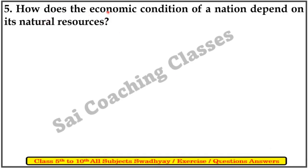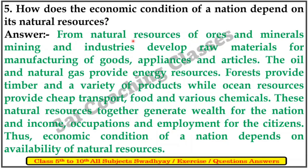Fifth question: How does the economic condition of the nation depend on its natural resources? Answer: From natural resources, oil and minerals mining and industry develop raw material for manufacturing of goods, appliances and articles. Oil and natural gas provide energy resources; forests provide timber and a variety of products; while ocean resources provide cheap transport, food and various chemicals. These natural resources together generate wealth for the nation and income, occupations and employment for the citizens.